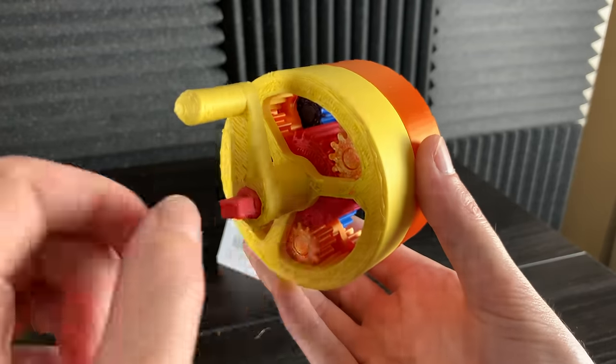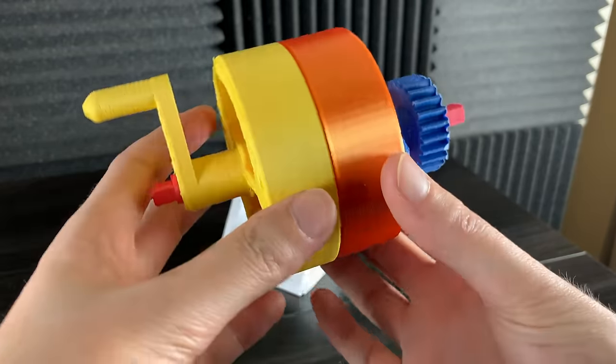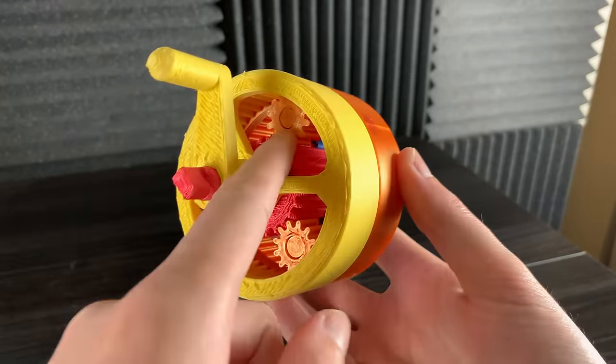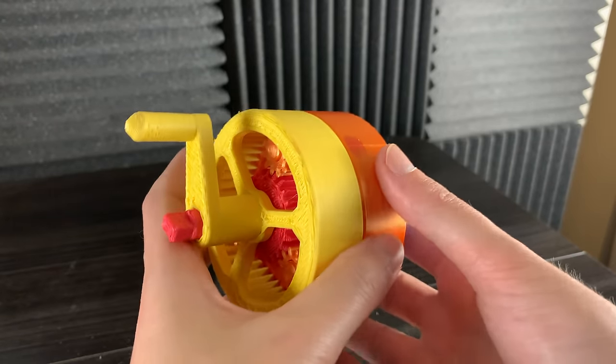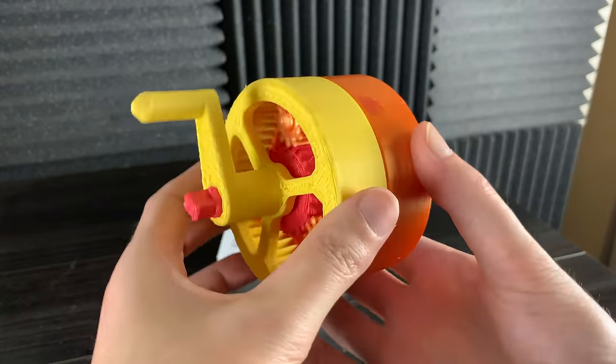The important thing to note is that the sun gear is shared between the two planetary gear sets. Also, the planet gears of the first planetary gear set are connected to the ring gear of the second planetary gear set.